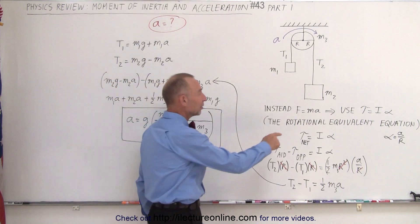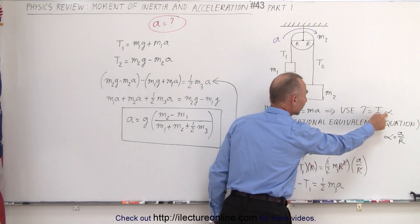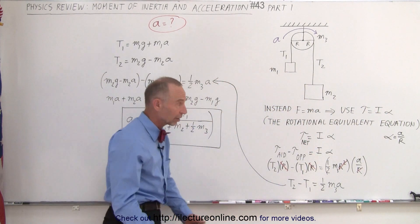And so instead of using F equals MA, remember we now need to use torque equals I times alpha. This is the rotational equivalent of F equals MA, Newton's second law.